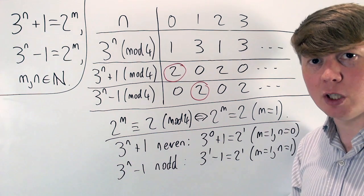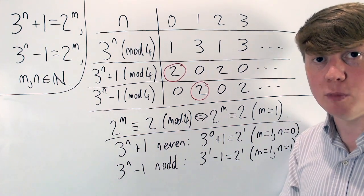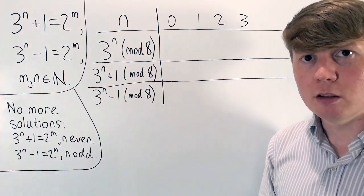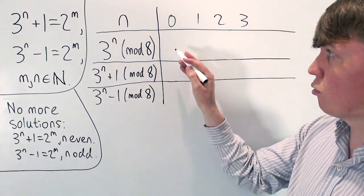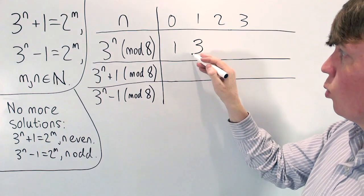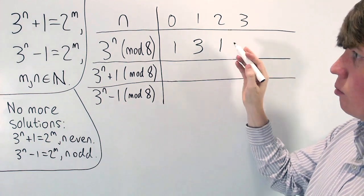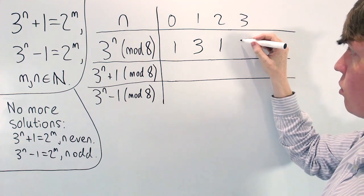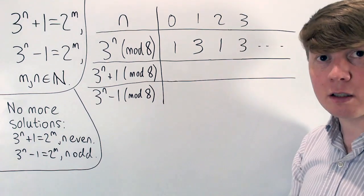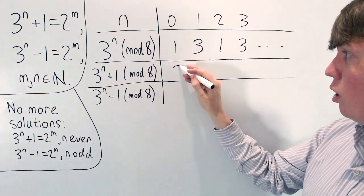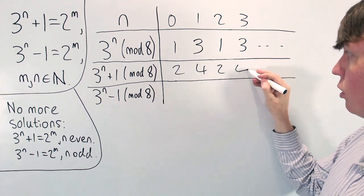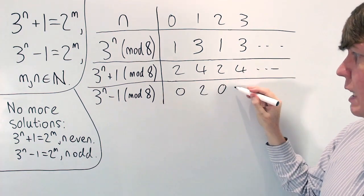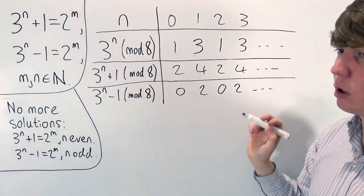Now we'll consider things modulo 8 to rule out more possibilities. Powers of 3 modulo 8 look very similar: 3 to the 0 is 1, 3 to the 1 is 3, 3 squared is 9 which is 1 mod 8, then 27 is 3 mod 8 — repeating 1, 3, 1, 3. So 3 to the n plus 1 goes 2, 4, 2, 4 repeating modulo 8, whereas 3 to the n minus 1 goes 0, 2, 0, 2 modulo 8.